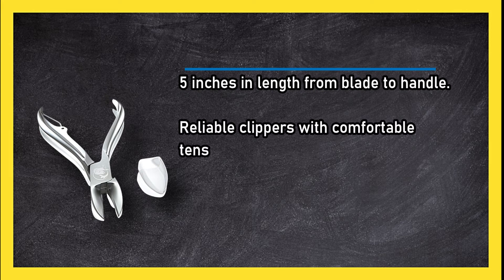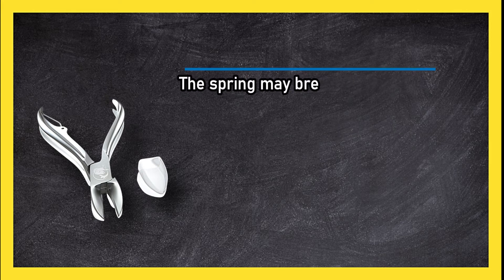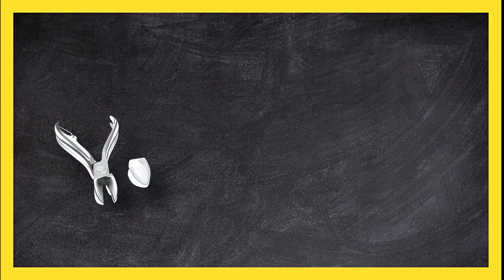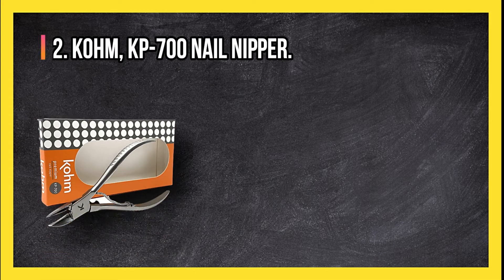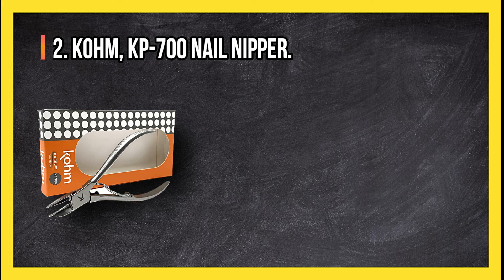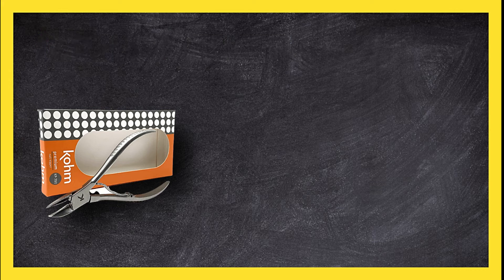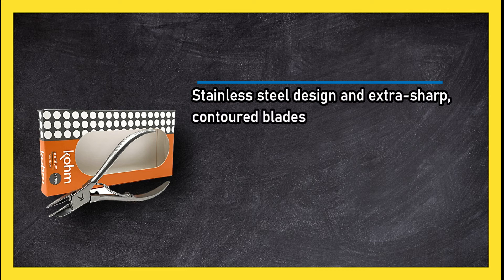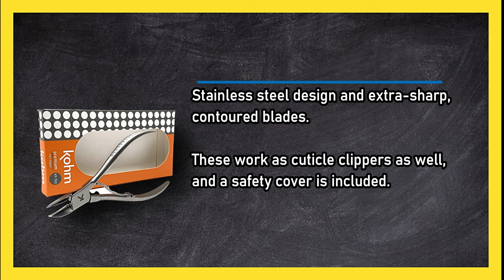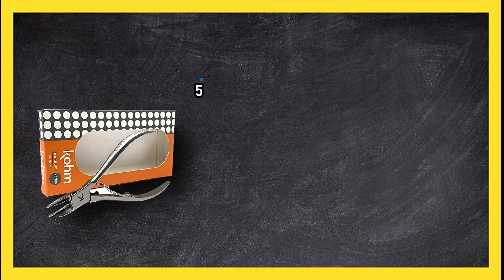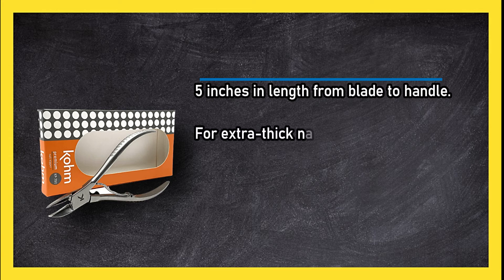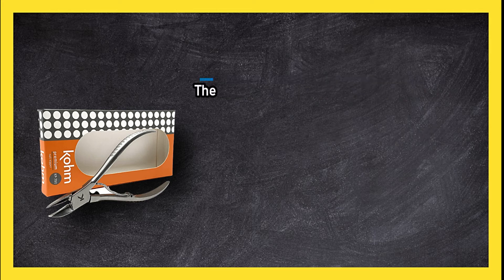At number two, Comb KP-700 Nail Nipper. Stainless steel design and extra sharp contoured blades. These work as cuticle clippers as well, and a safety cover is included. Five inches in length from blade to handle. For extra thick nails, these clippers do the job. The jaws are not as durable as they could be.